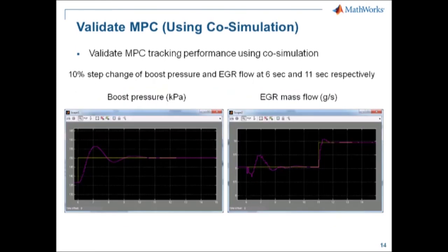Now let's use co-simulation to verify the controller design against the nonlinear plant model. We apply the same step changes in boost pressure and EGR mass flow. On the boost pressure side, there is a much larger overshoot in the nonlinear simulation, which hints that we may need to detune the boost pressure control performance to reduce overshoot. The EGR mass flow overshoot is not that bad and is totally acceptable.